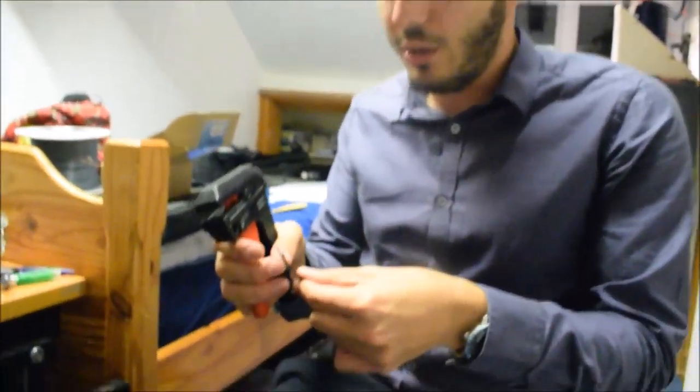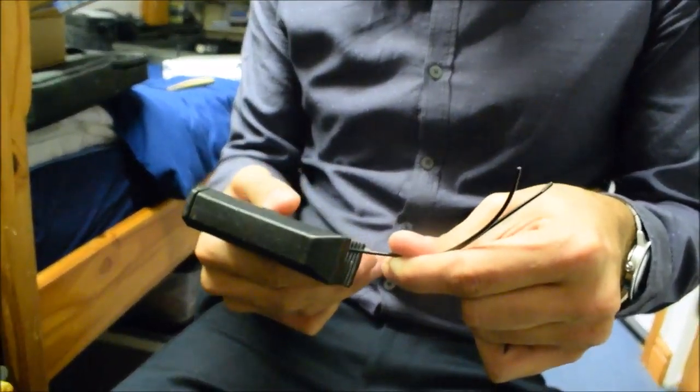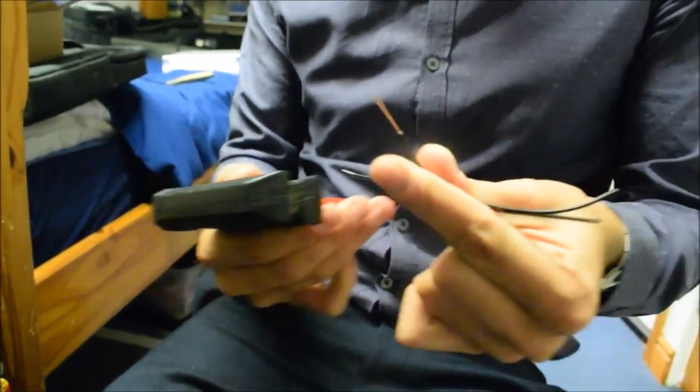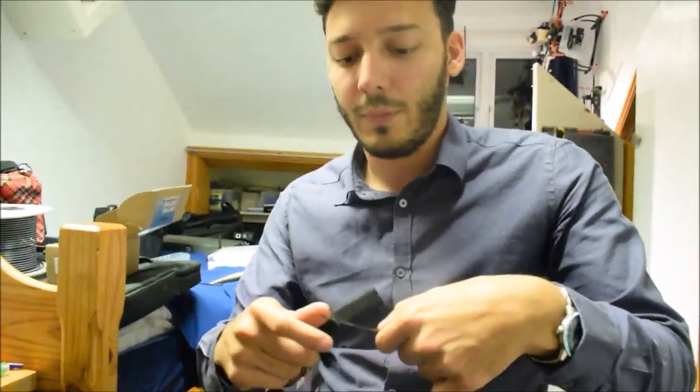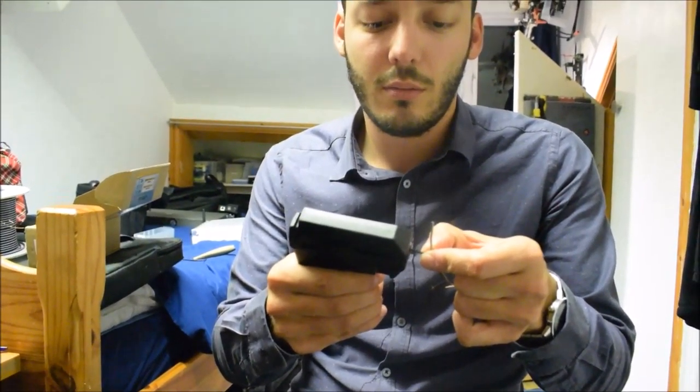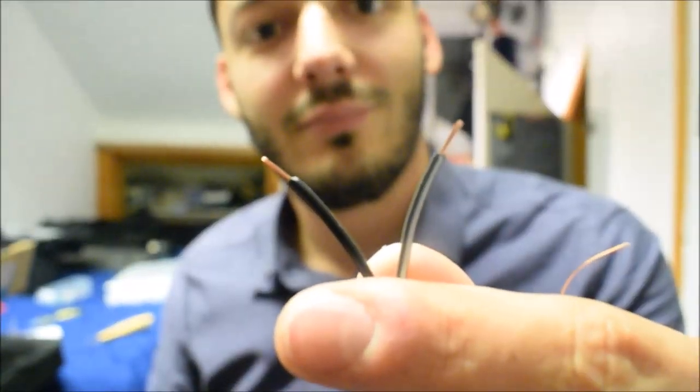Cut it down to whatever length you want, but essentially this is going to be the e-match. One end is going to be chopped pretty long so that we can twist them on the day. The other length, you need to take about five millimeters off. It's actually focused for once.